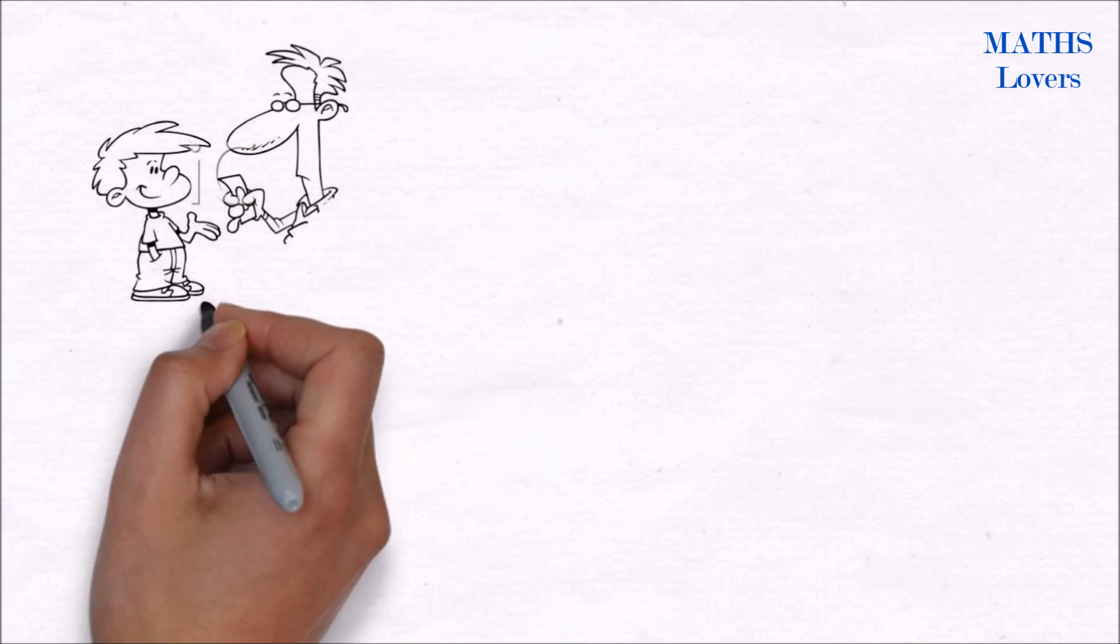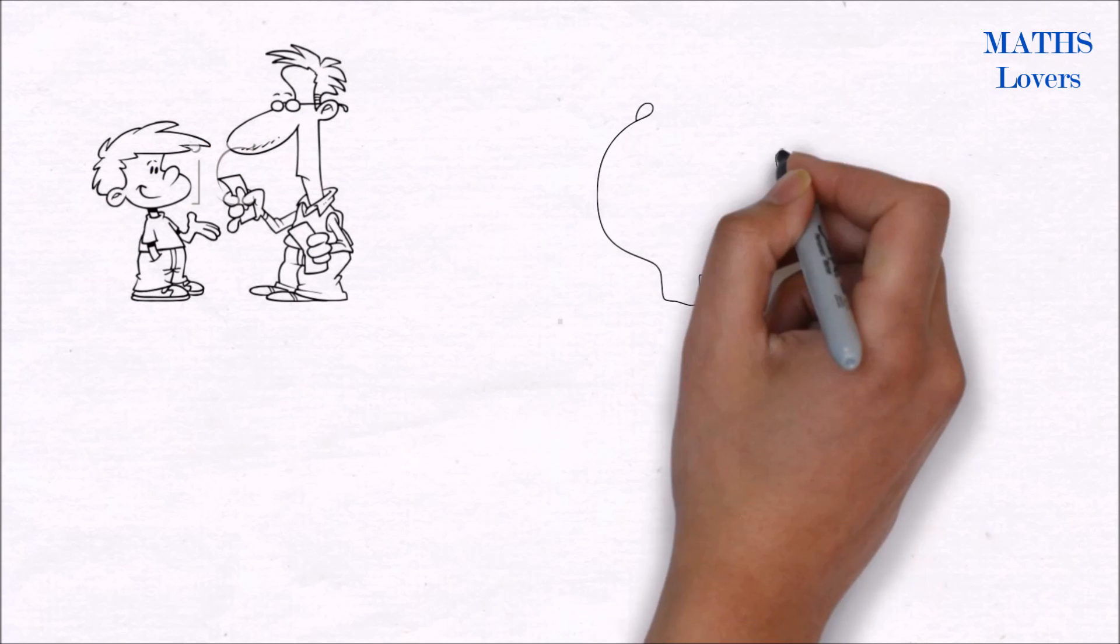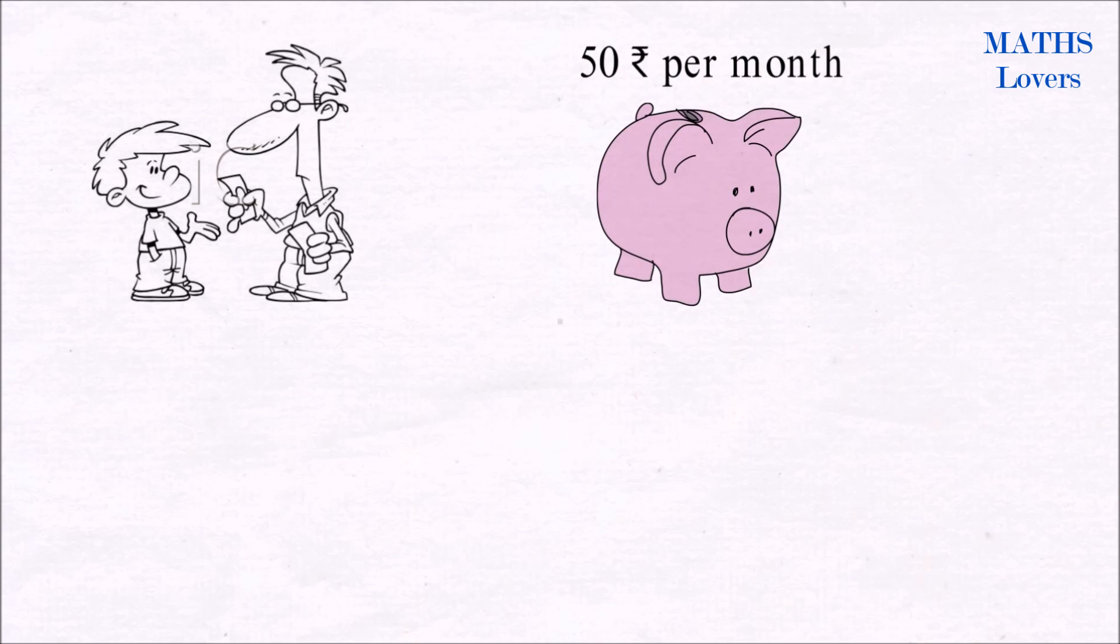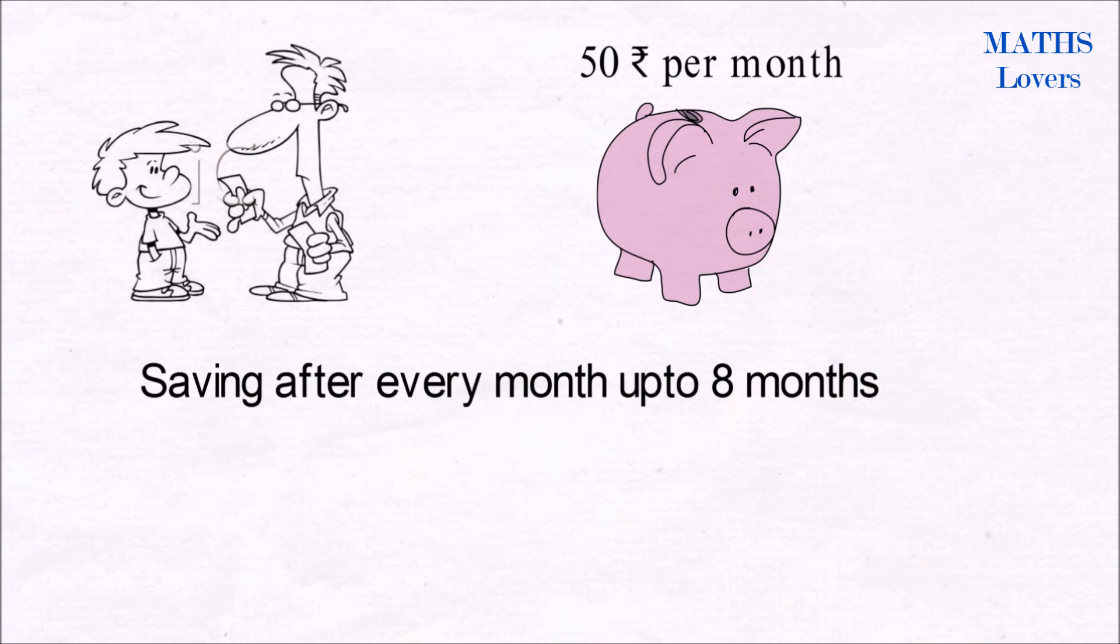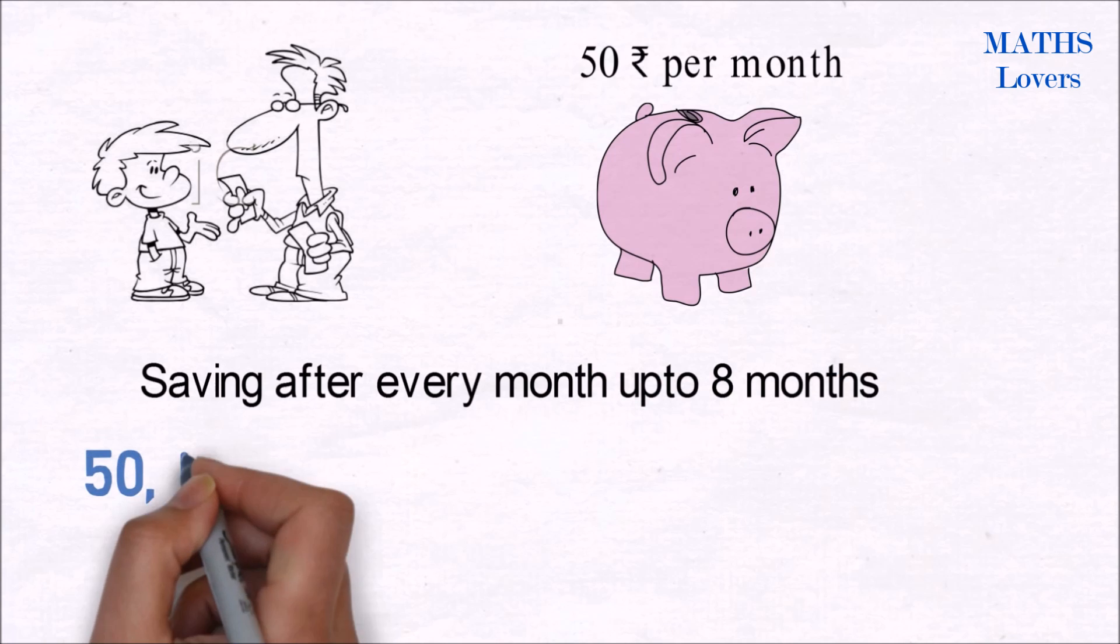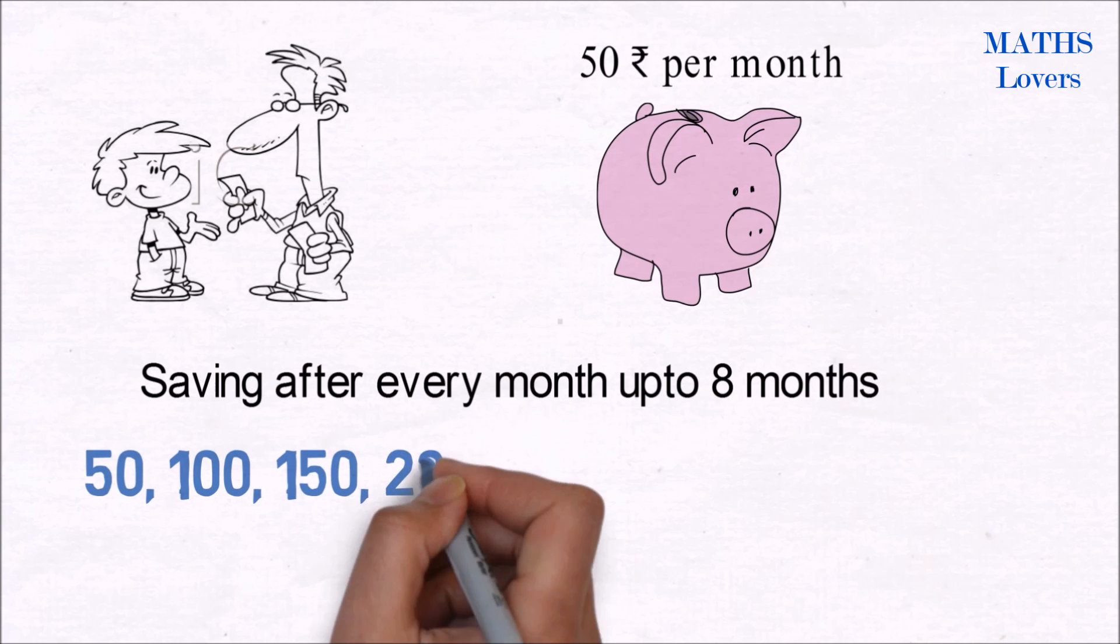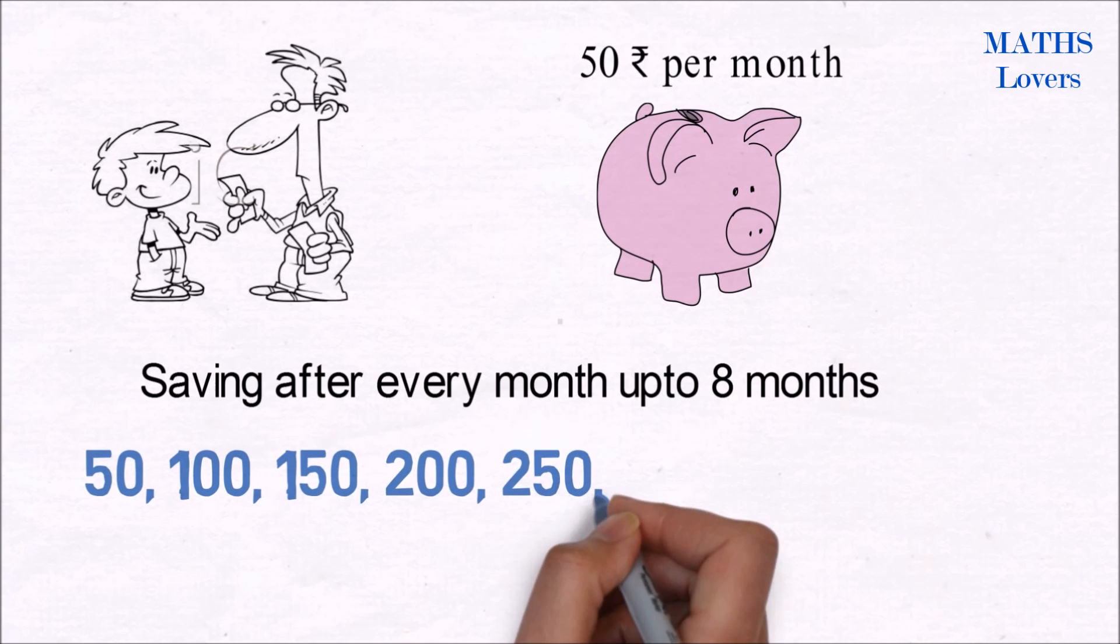Let's understand it with a daily life example. Assume your father gives you sufficient pocket money. You save 50 rupees per month. What will be the saving after every month if you save for 8 months? It will be like this: 50, then 50 plus 50 equals 100, then 100 plus 50 equals 150, and so on.